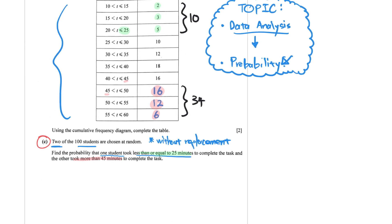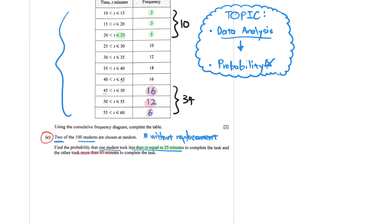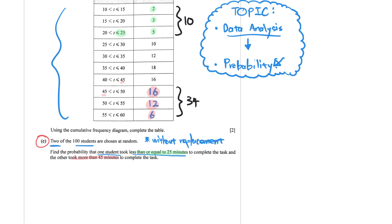Now you could draw a probability tree to help you imagine this, but by experience, if I wanted to choose one student who took less than or equal to 25 minutes and then a second student who is more than 45 minutes, it could be the 25 first, then the 45 or the 45 first and then the 25. So there's two possible possibilities.